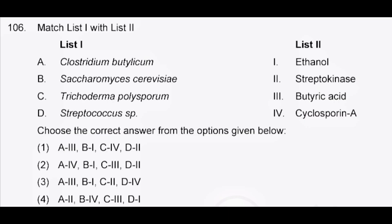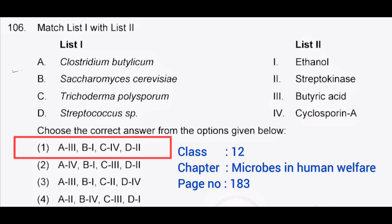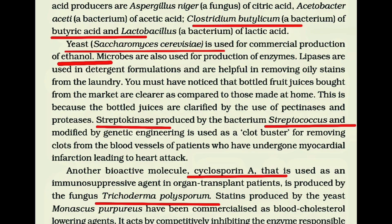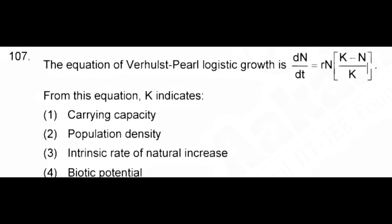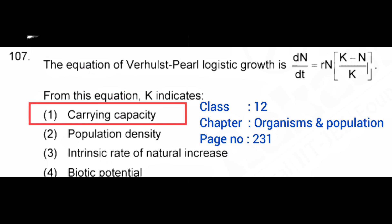Match list 1 with list 2 — correct answer: option 1, A3, B1, C4, D2. The equation of Verhulst-Pearl logistic growth is dN/dt = rN(K−N)/K. From this equation, K indicates — correct answer: option 1, carrying capacity.